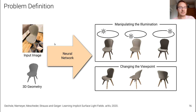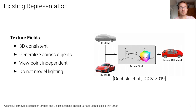The problem is defined as follows: given 3D geometry derived using an implicit method or another method, and a real image of that object as input to a neural network, we want to infer for a particular viewpoint or light location what the object would look like. This is a real result of our method — taking an input image and geometry, we can manipulate the light source so the object is differently lit and shadows change, or manipulate the viewpoint with a fixed light source.